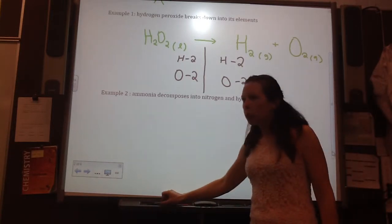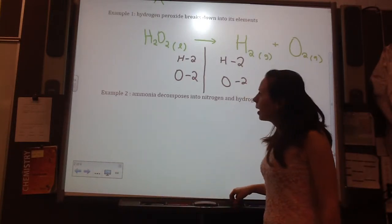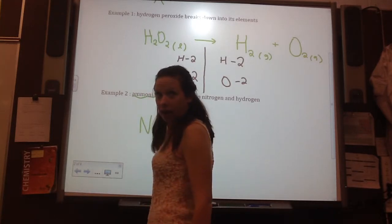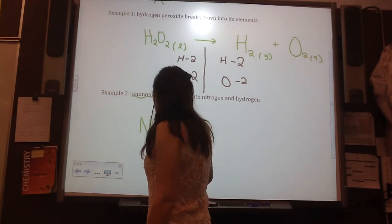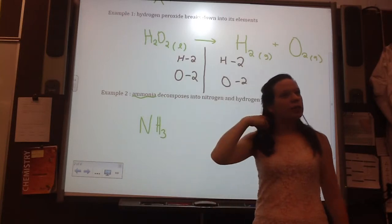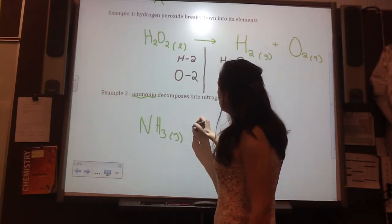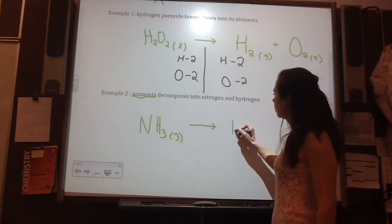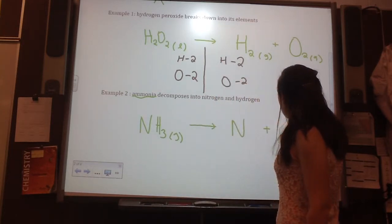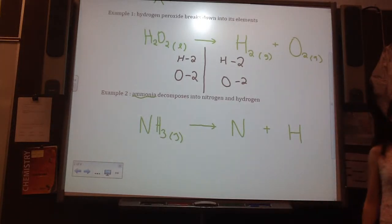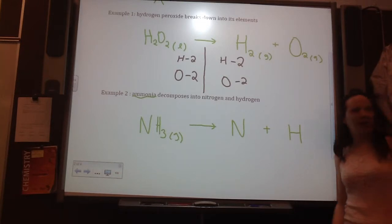All right. Another one. Ammonia. That was another memory one. So, ammonia, NH3, what is it at its room temperature? Gas. Gas decomposes into nitrogen and hydrogen. Good one, Chris.